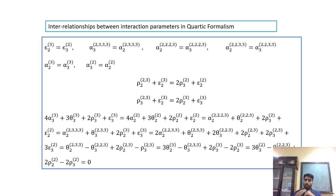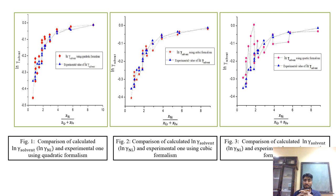We can go through the normal route by partially differentiating the polynomial. Now, to see the practical utility of such formalisms, we have taken the example of the nickel-chromium-iron system, where we obtained the values of ln gamma solvent using the cubic, quartic, and quadratic formalisms. We obtained close agreement between experimental values and calculated values in the case of cubic formalism. The quartic formalism should theoretically be more accurate, since higher-order formalisms are much more accurate than lower-order ones.